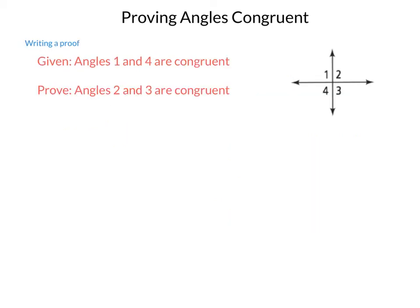How else can we use these? In a more formal proof, we can be told from the diagram that angles 1 and 4 are congruent, but we need to prove that angles 2 and 3 are congruent.